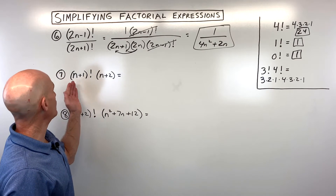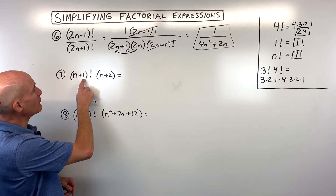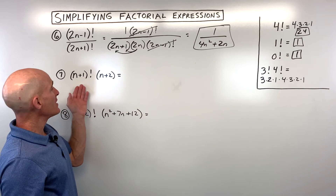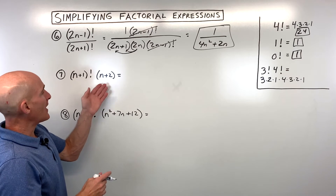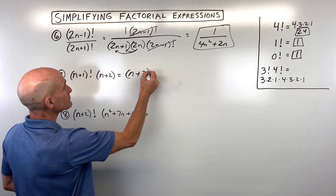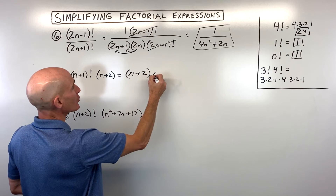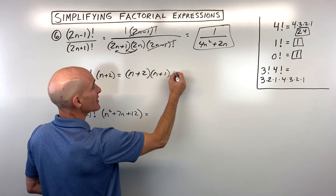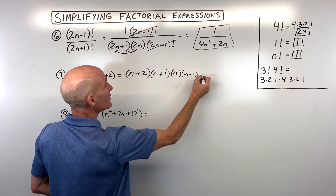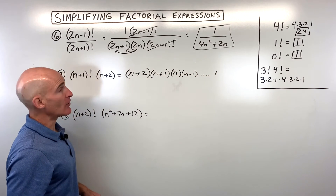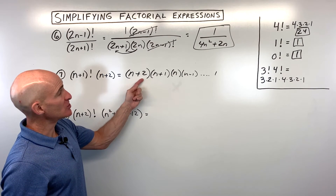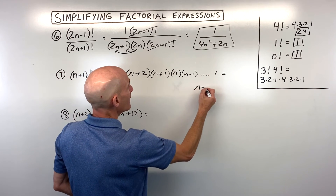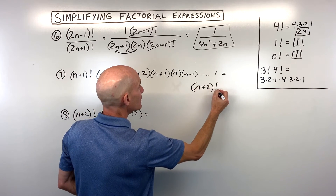For example number seven, we have n plus one factorial times just n plus two — not factorial, just n plus two. The n plus two stays as is. The n plus one factorial counts down: n, then n minus one, all the way down to one. Notice we're starting at n plus two and subtracting one each time, so we can really write this as n plus two factorial.